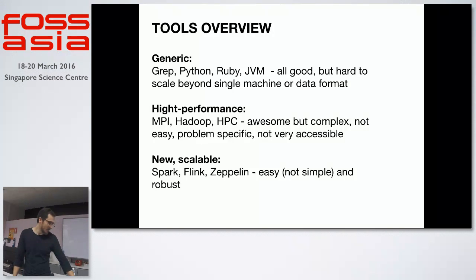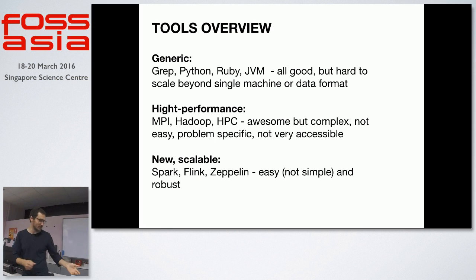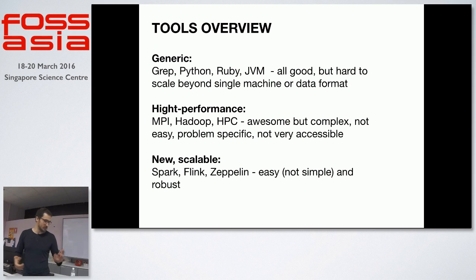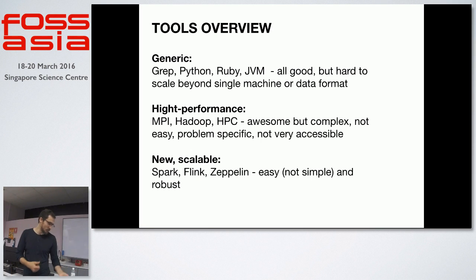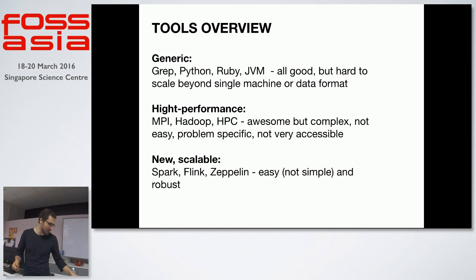Now let's look at some tools we're going to use to crunch the data. There are plenty of tools and I tried to classify them: there are generic ones like grep and various programming languages with libraries — all good, but hard to scale beyond one machine. Then there are high-performance, low-level tools like Hadoop — they do the job but you spend a lot of time learning them or getting access to a cluster. Recently there's been a plethora of tools I call 'new and scalable,' and those are the ones we'll talk about — almost all of them happen to be under the Apache Software Foundation.